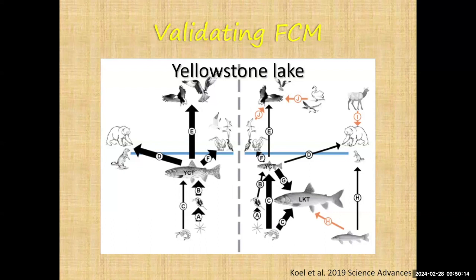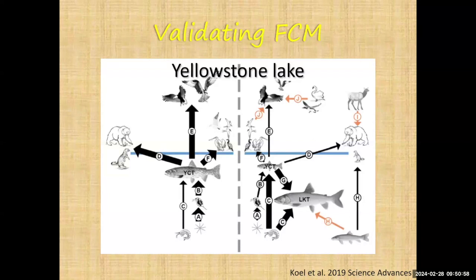One of those case studies is Yellowstone Lake and the lake trout introduction. Lake trout were introduced illegally by fishermen into Yellowstone Lake, and it really turned the system on its head. Because it's in Yellowstone National Park, it was studied intensively before and after this happened — so we have really good data. We take the pre-introduction data, parameterize our model, and then ask the model what's going to happen when lake trout are introduced. Prior to lake trout, native Yellowstone cutthroat trout were the dominant fish — the top of the aquatic food chain and the bottom of the terrestrial food chain, supporting bald eagles, osprey, gulls, pelicans, river otters, and even grizzly bears.